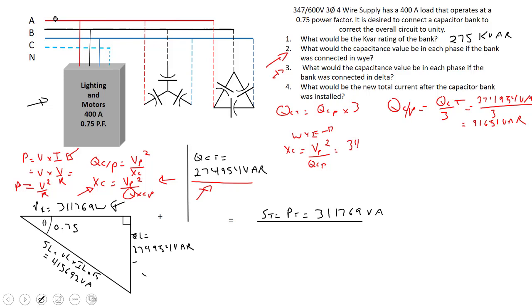346.4 volts is our phase voltage. We're going to square that value and divide by our 91,651 VAR. That's going to come to about 1.309 ohms.